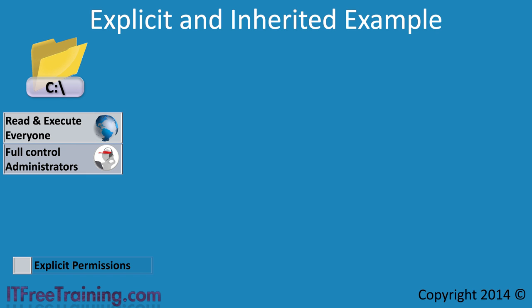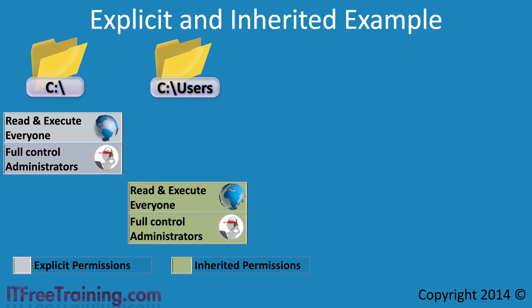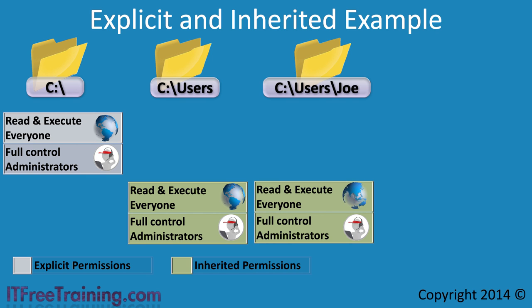The next step is to create a folder called Users on the C drive. The folder will inherit the permissions of the C folder. The next step is to create folders for each user. The first folder will be created for the user Joe. Like all the user folders, this folder will inherit the permissions of the parent folder, giving all users the ability to read the folder.